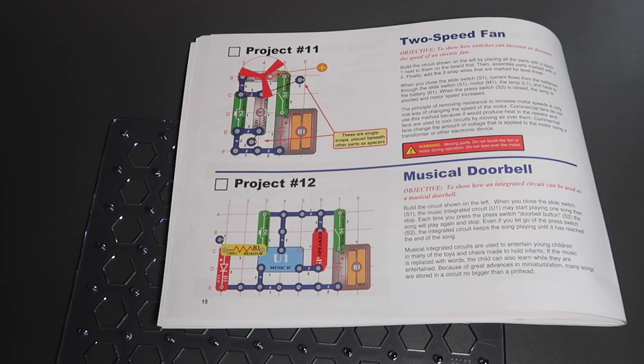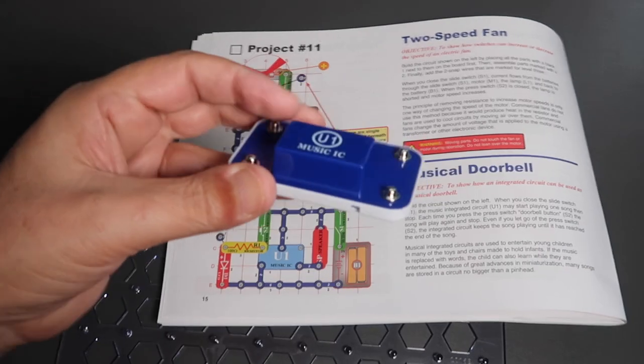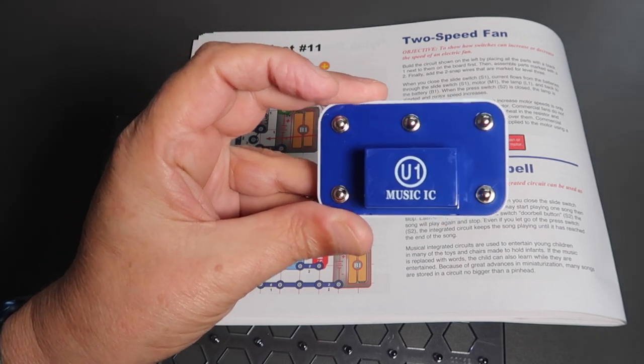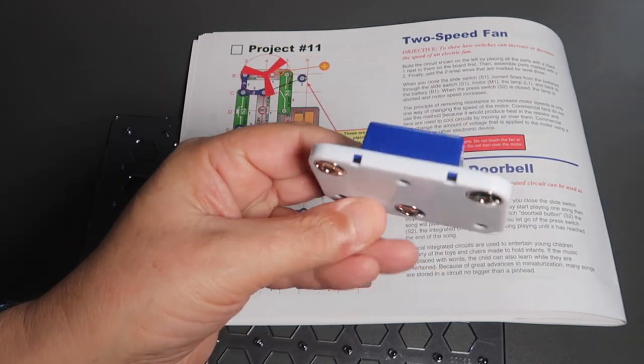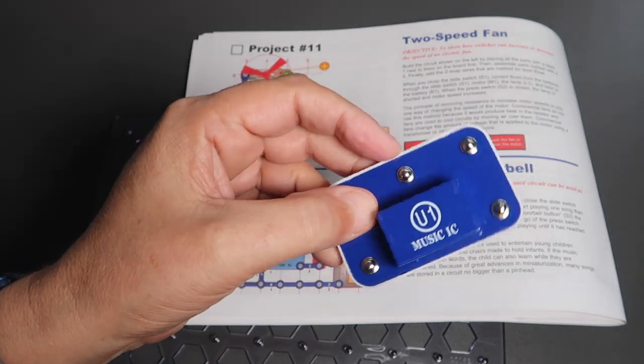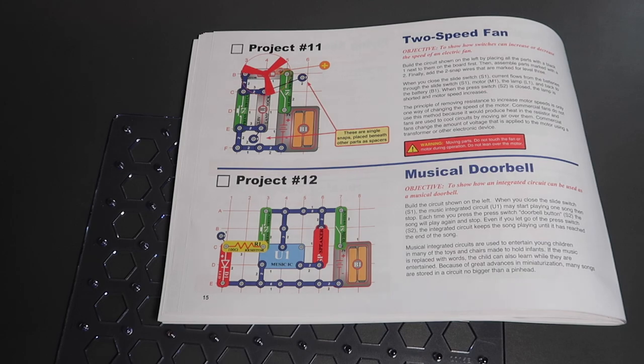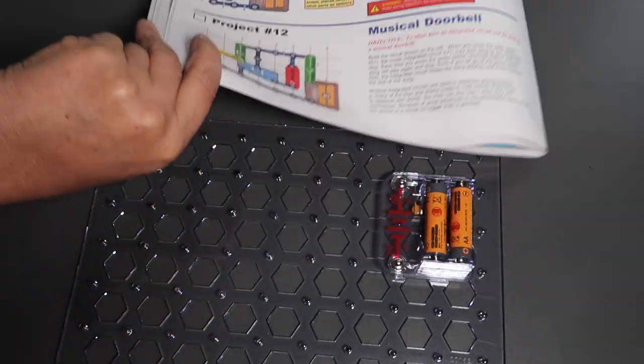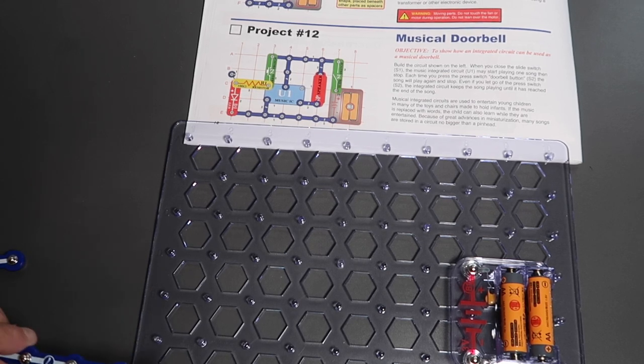Let's take a look at project 12, a musical doorbell. And in this kit, there are several of these components which are marked and they have an integrated circuit put inside the box. So let's have a go at this one. And I have the power there.